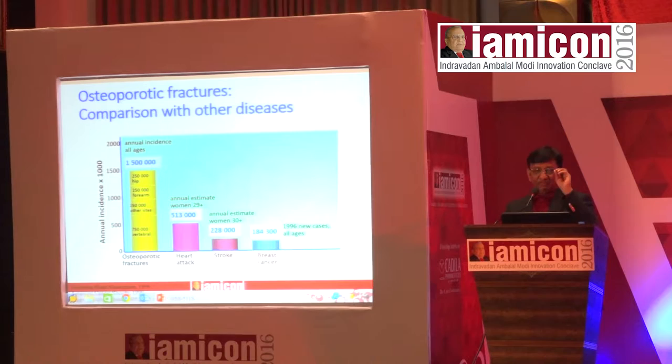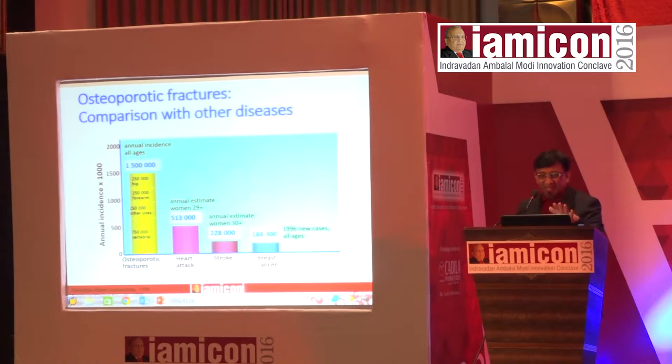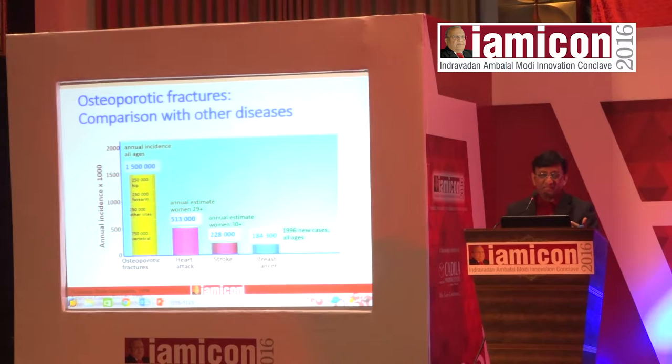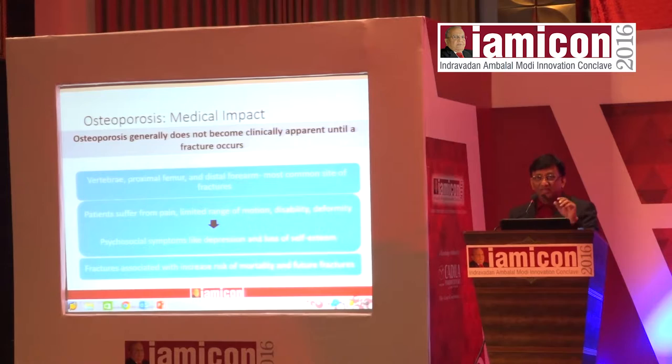Consider four diseases at age 60: breast cancer, stroke, heart attack, and osteoporosis. If you calculate annual incidences, breast cancer is the lowest, yet we call it a disease. Osteoporotic fractures are 1.5 million annually. I call it an epidemic that is going to come in the next 20 years — that is how broad and vast this is growing.